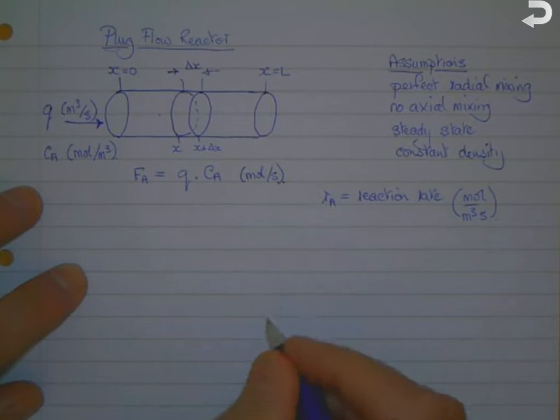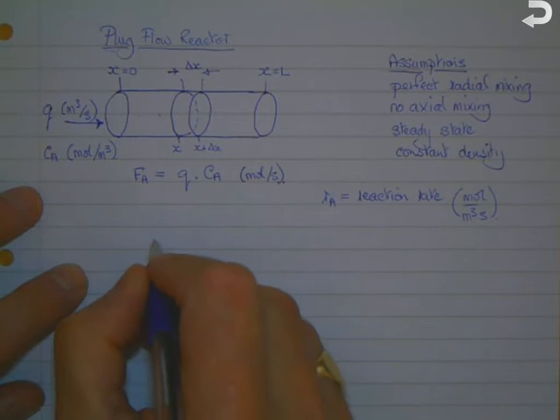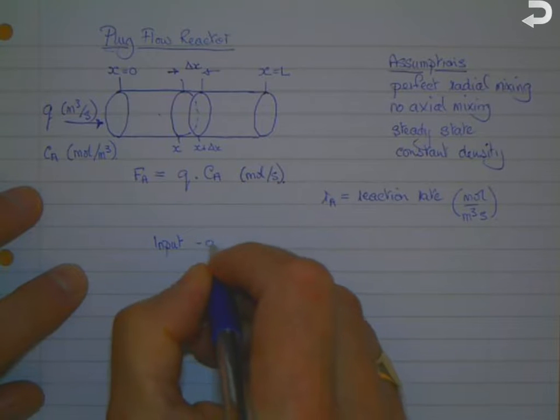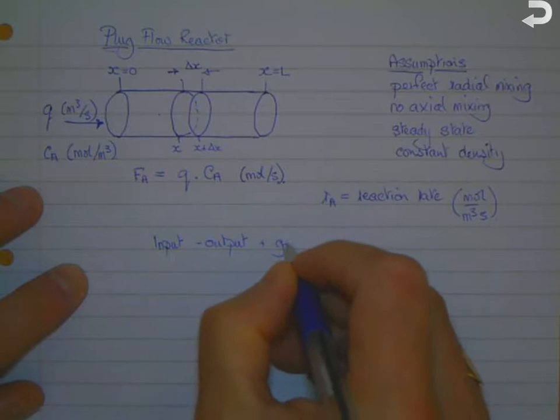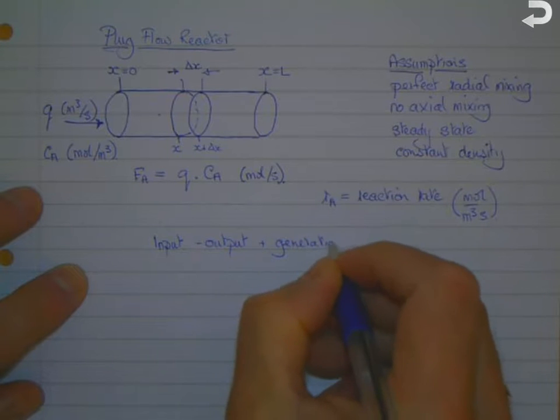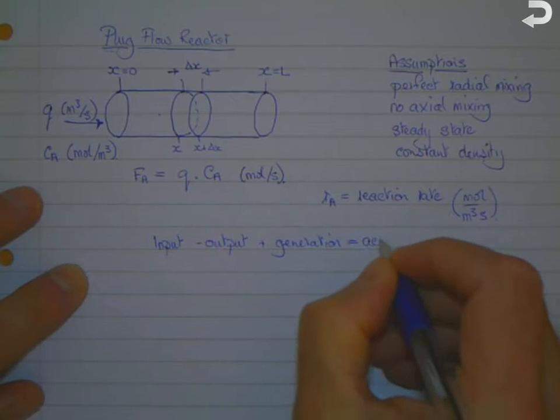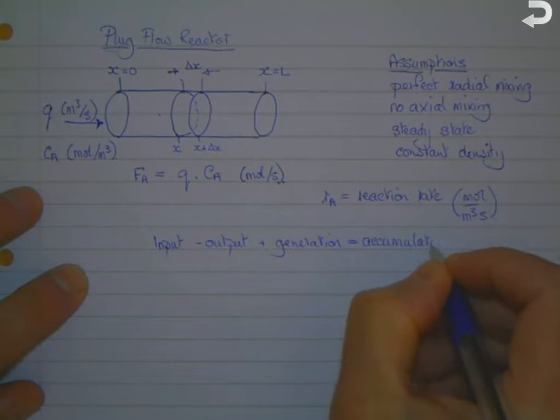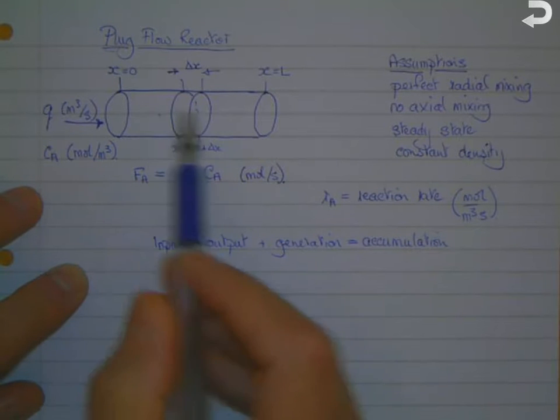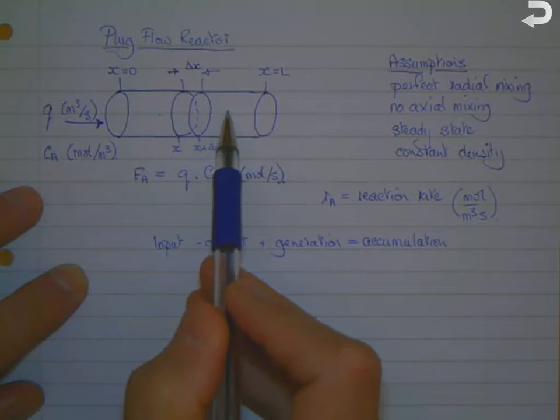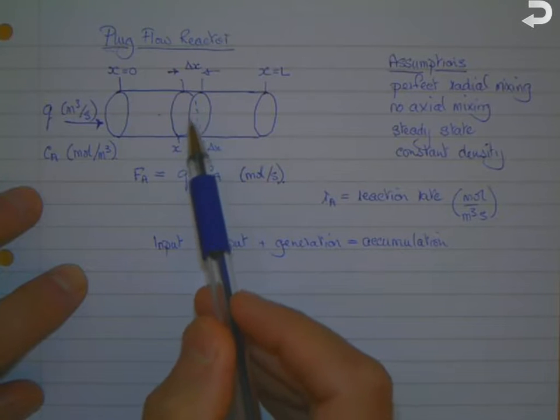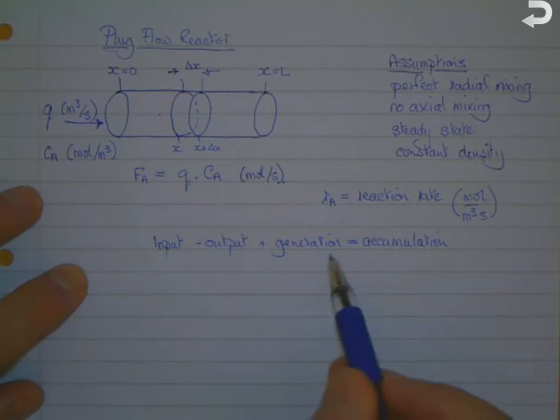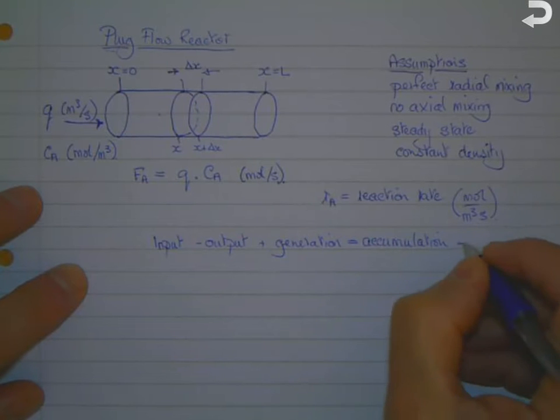So let's do the material balance using the usual equation: input minus output plus generation equals accumulation. What goes into this segment equals what comes out of the segment plus the generation term, what's reacting in there to change the concentration. The sum of those three terms equals the accumulation, but the accumulation is zero because it's a steady state process with no variation with time.